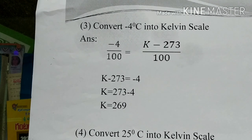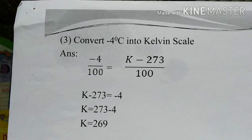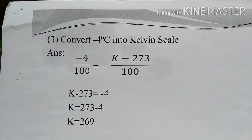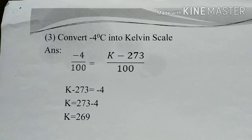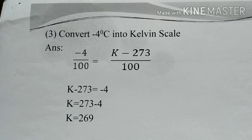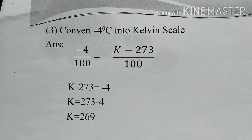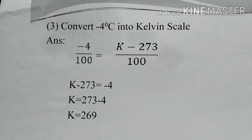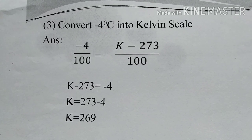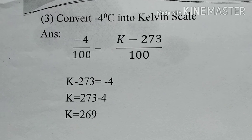Third numerical: convert −4 degrees centigrade into Kelvin scale. Using −4/100 = (K − 273)/100, cancel 100 on both sides: K − 273 = −4, so K = 273 − 4, which gives K = 269.